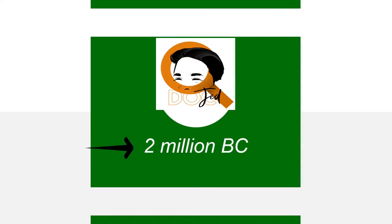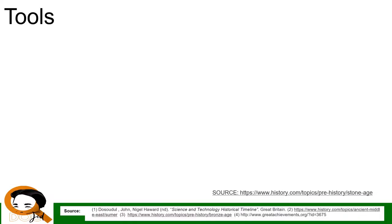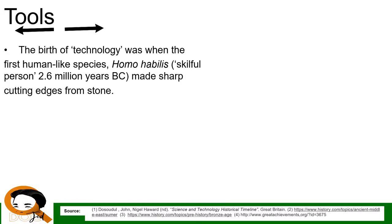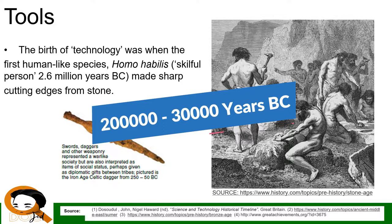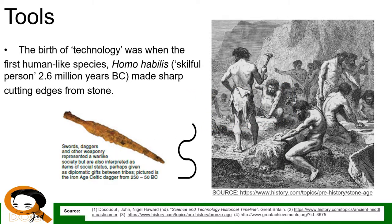Let's start at 2 million years BC. The birth of technology was when the first human-like species, Homo habilis — meaning 'skillful person,' 2.6 million years BC — made sharp cutting edges from stone. Later, Homo neanderthalus, or cavemen (200,000–30,000 years BC), used tools and weapons and were the very successful ancestors of Homo sapiens, the species we recognize as our ancestors today.